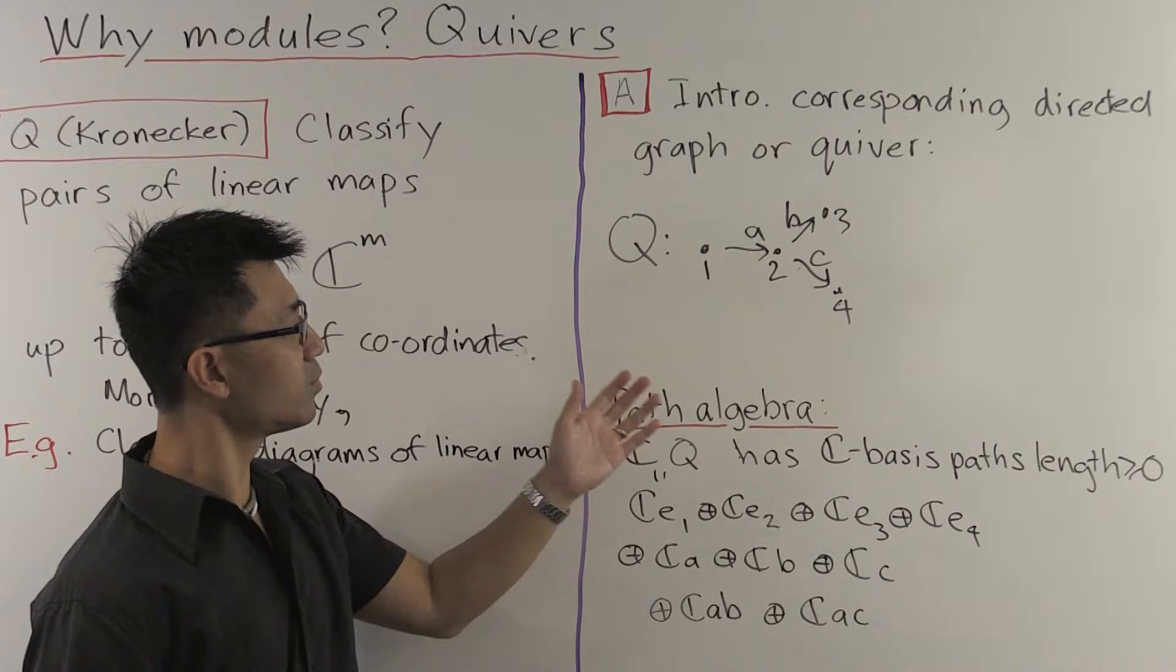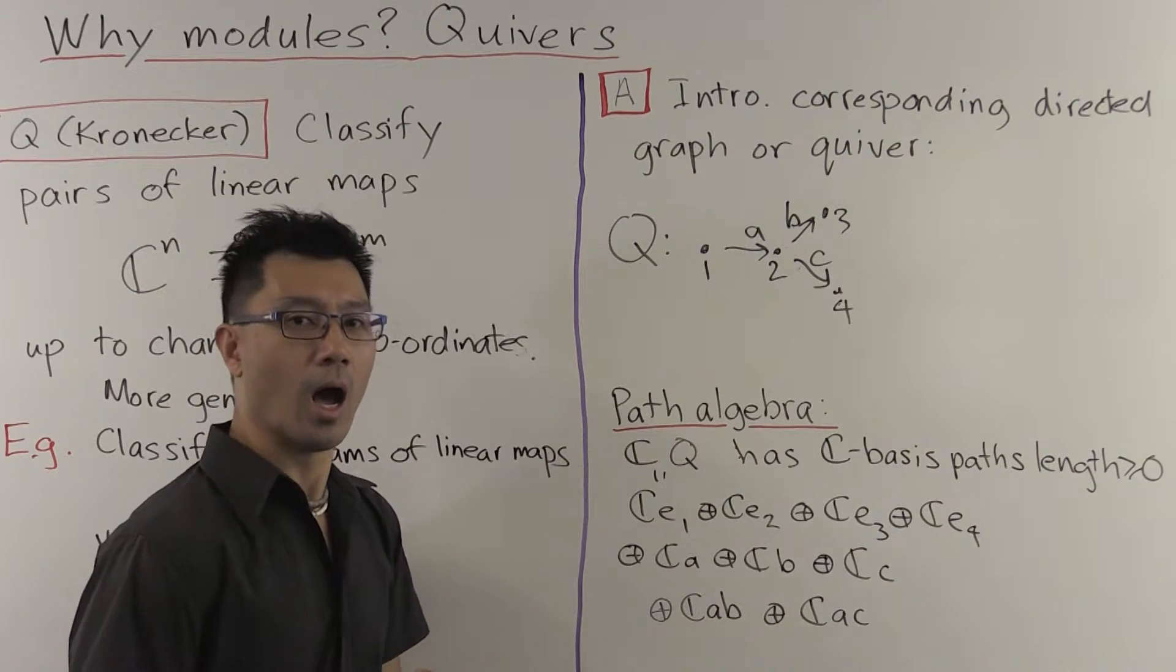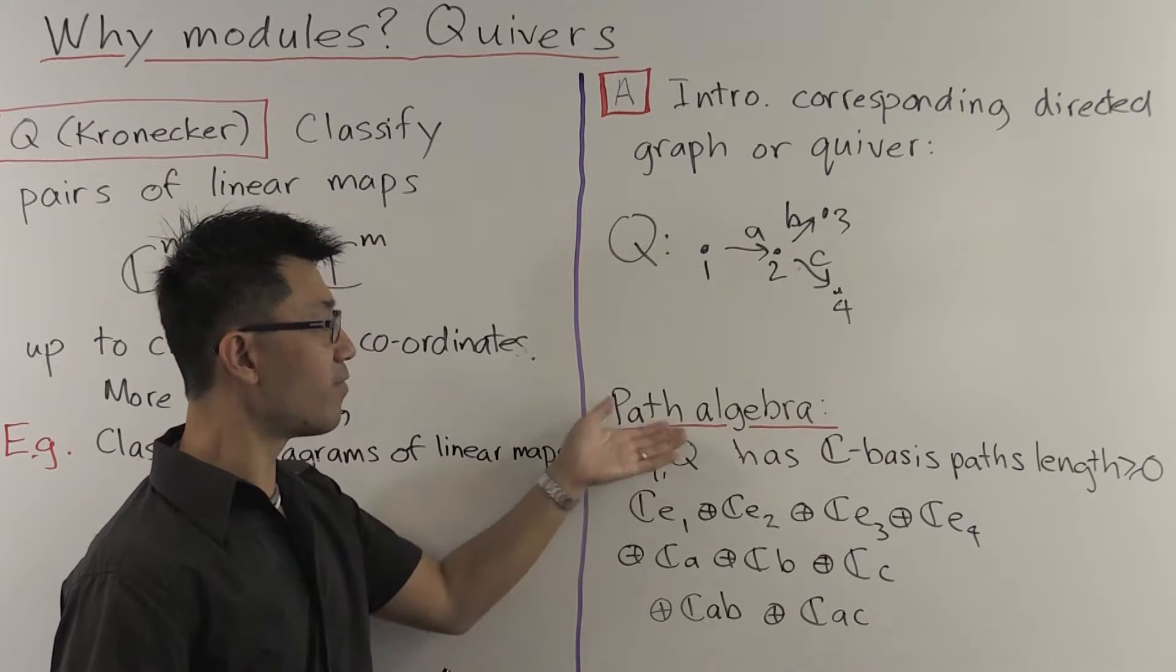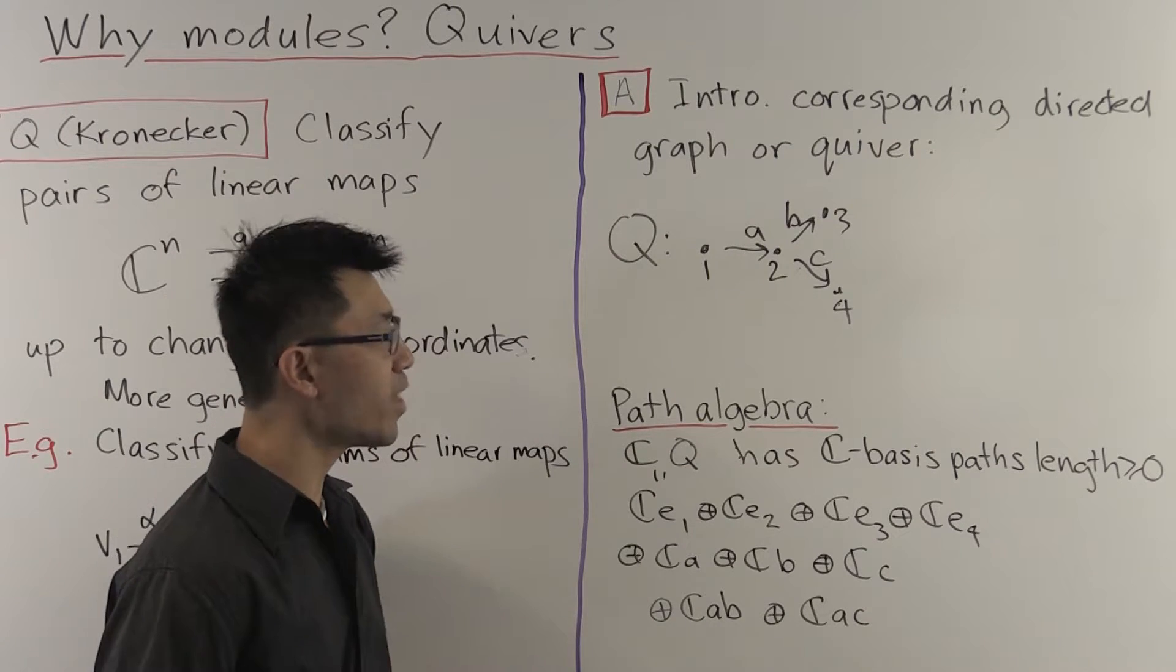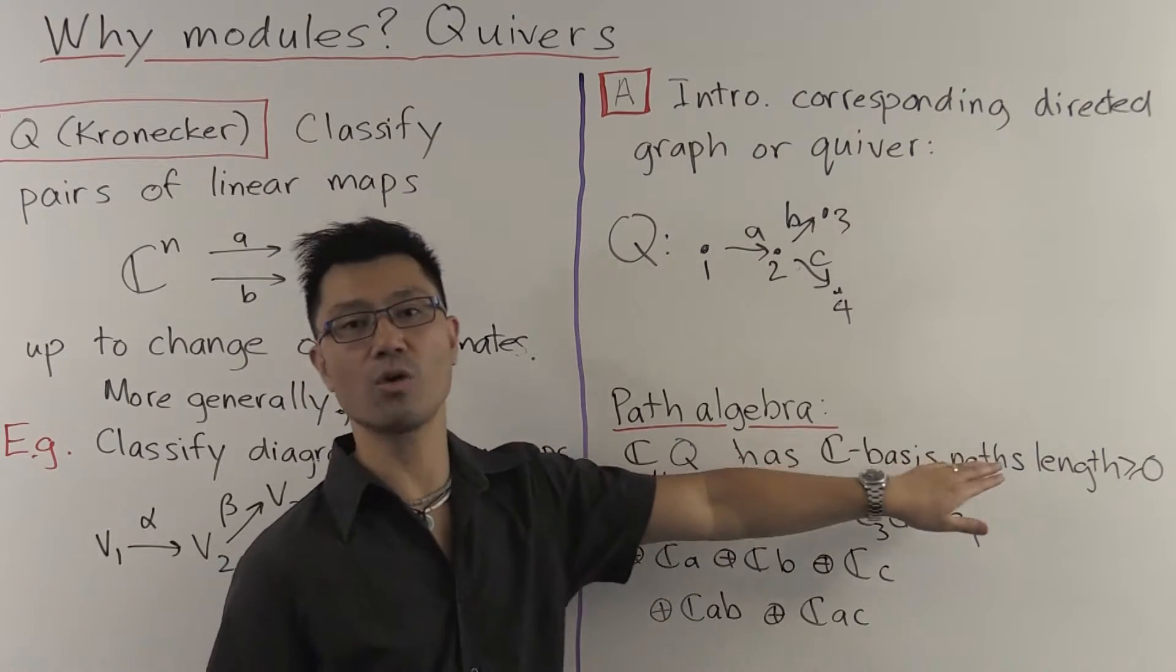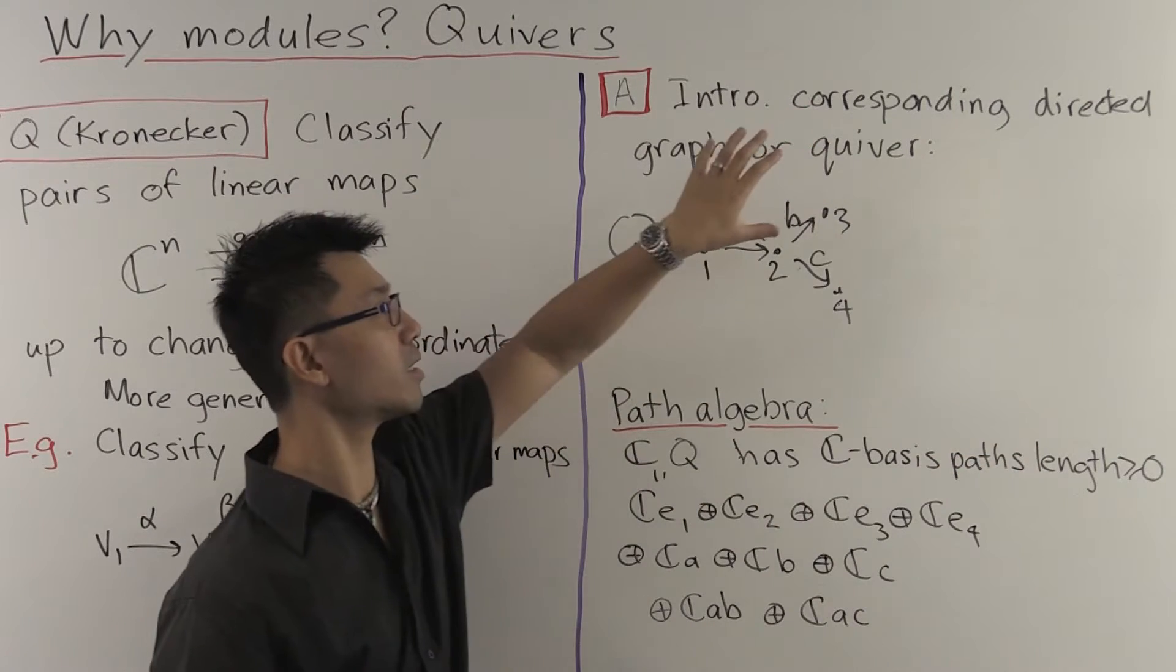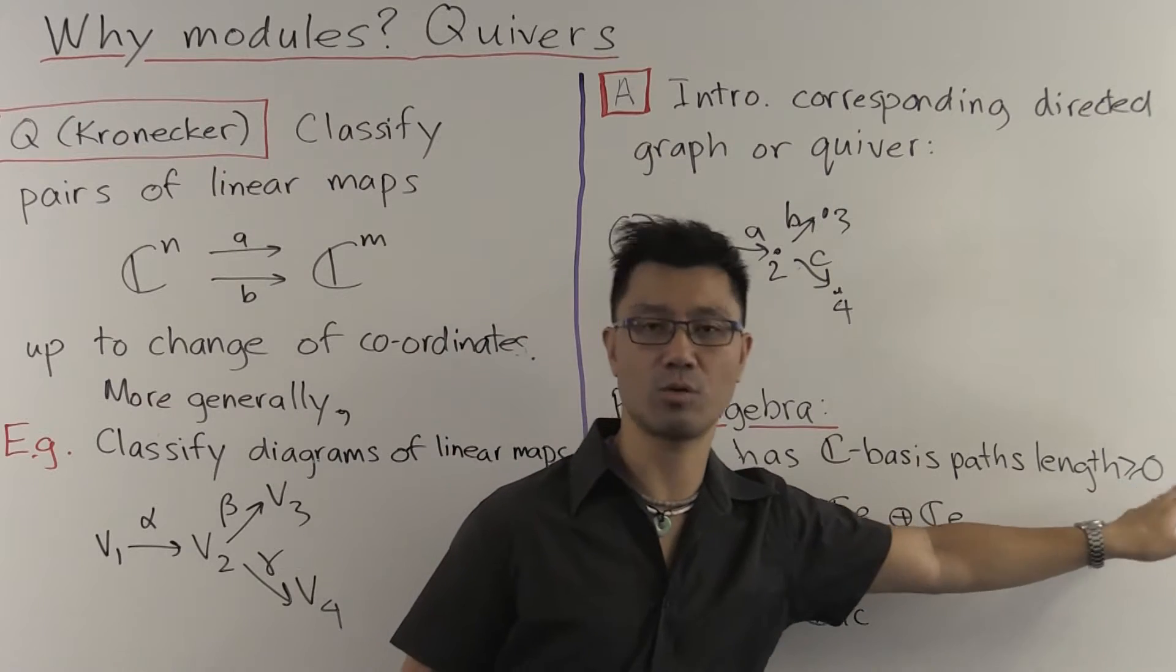Okay, so to define this path algebra, which we denote by CQ, I'll firstly define the vector space structure over C. So to do that, I just have to give you a basis over C. And the basis is just all the paths inside this directed graph.